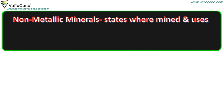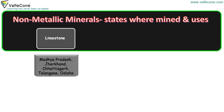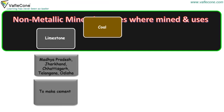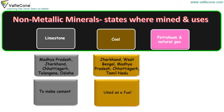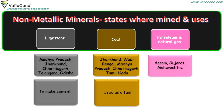Now let's look at non-metallic minerals — the states where they are mined and their uses. Limestone is found in Madhya Pradesh, Jharkhand, Chhattisgarh, Telangana and Odisha, and it is used to make cement. Coal is found in Jharkhand, West Bengal, Madhya Pradesh, Chhattisgarh and Tamil Nadu, and it is used as a fuel. Petroleum and natural gas are found in Assam, Gujarat and Maharashtra, and they are used as fuels.